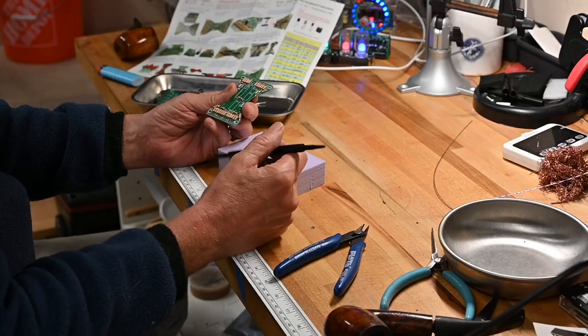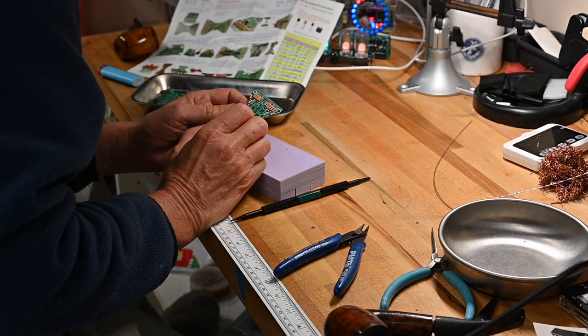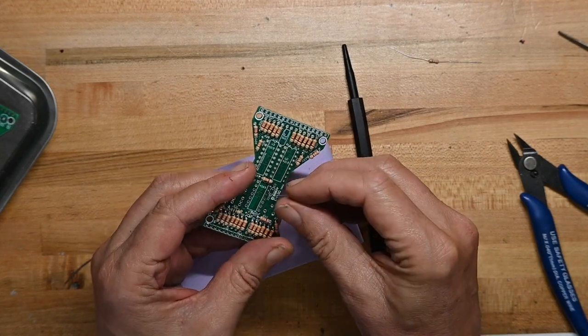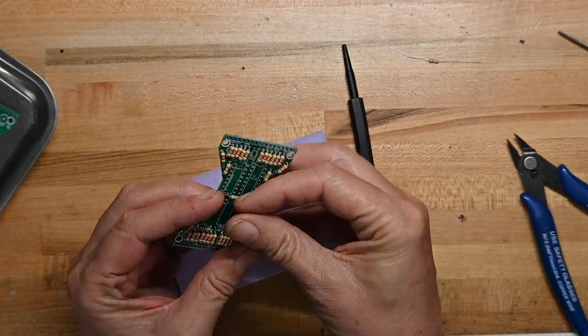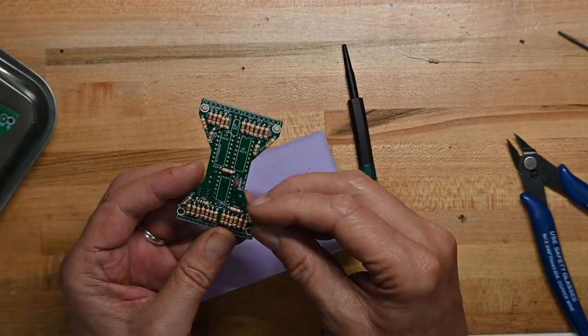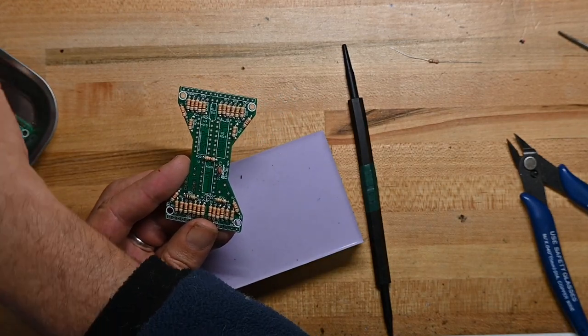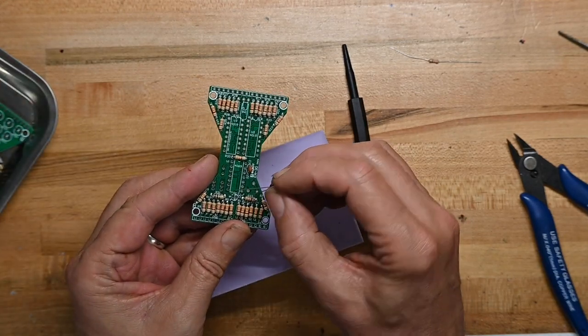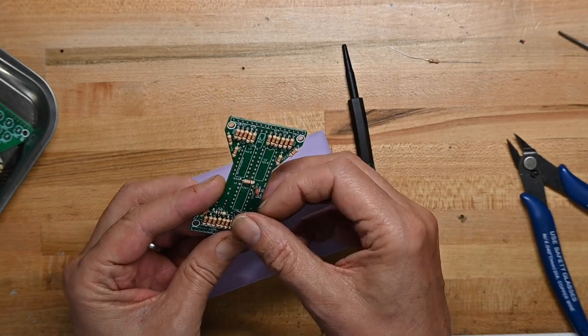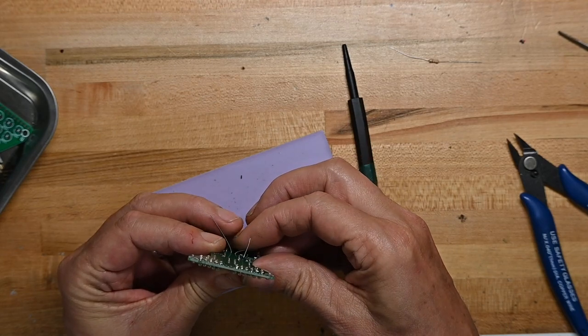So let's see. What do we want to do next? We want to do the little 2.2.2 cap, which goes right here. And we're going to do the electrolytic, which goes right here. Long lead goes in the positive hole on the circuit board.